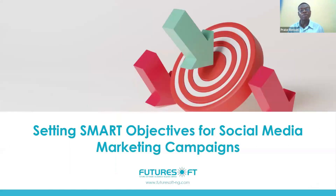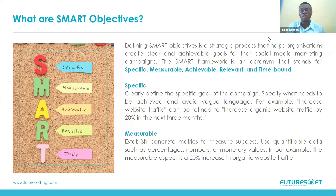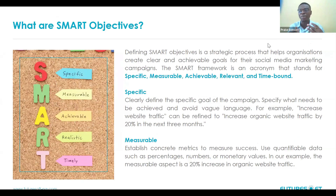Let's consider how to set SMART objectives for your social media campaign. You don't just want to wish for things to happen — you have to break them down into actionable points. Most brands want to do more, but if you ask what they want to achieve, you hear vague answers like 'I want to reach a global audience.' The real question is: how do you want to achieve this? It's not about wishing — what are the strategies, and how have you broken them down into actionable points?